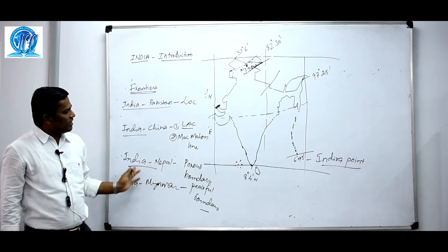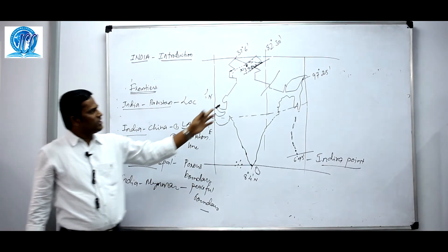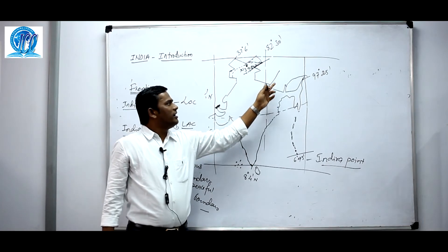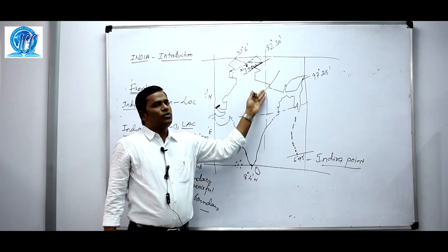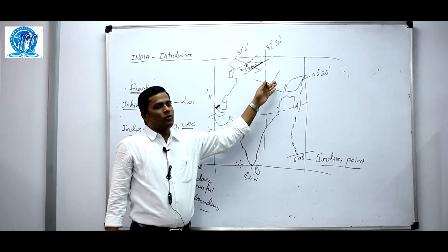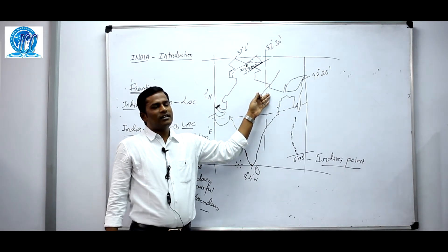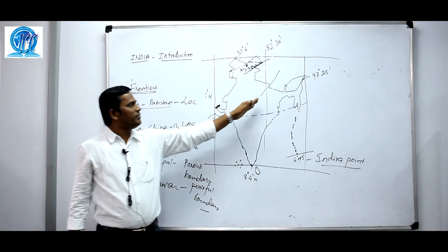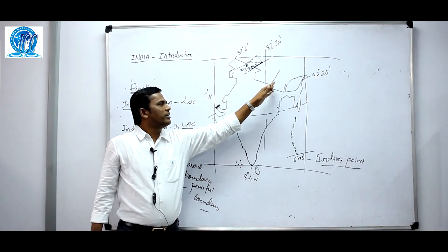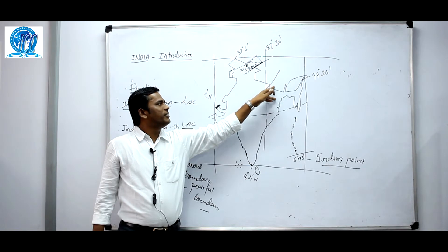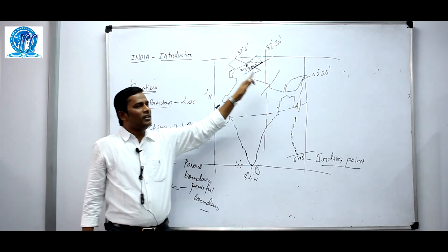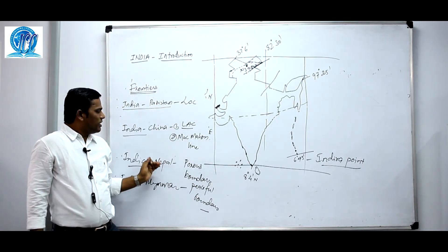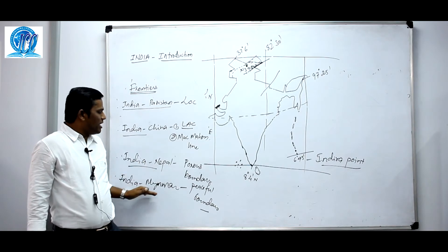The India-Nepal border is a porous boundary, meaning people can move freely from one country to another. There are no restrictions — trade and economic activities can be done without any restrictions between India and Nepal. Anyone can come from India into Nepal and from Nepal to India.